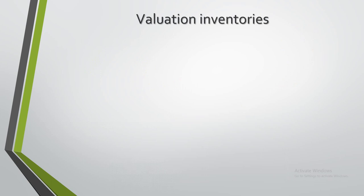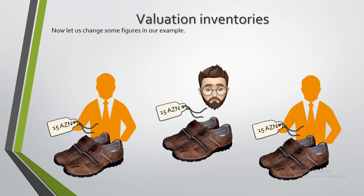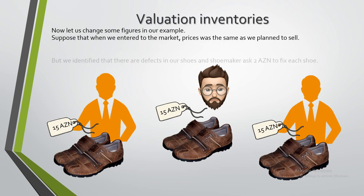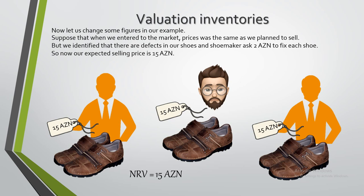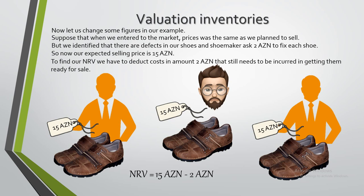Now let's change some figures in our example. Suppose that when we entered the market, prices were the same as we planned to sell, but we identified defects in our shoes and the shoemaker asks only 2 ACN to fix each shoe. Our expected sale price is still 15 ACN. To find NRV, we deduct the 2 ACN repair cost, giving us an NRV of 13 ACN.